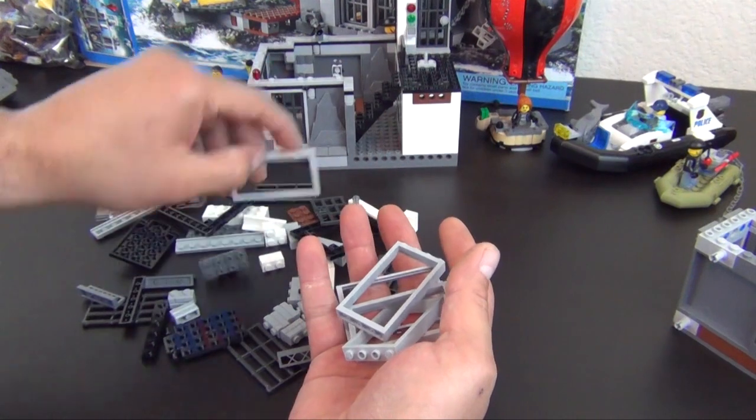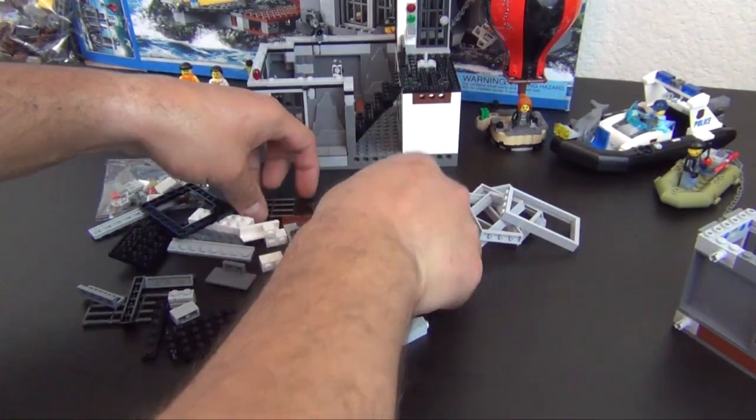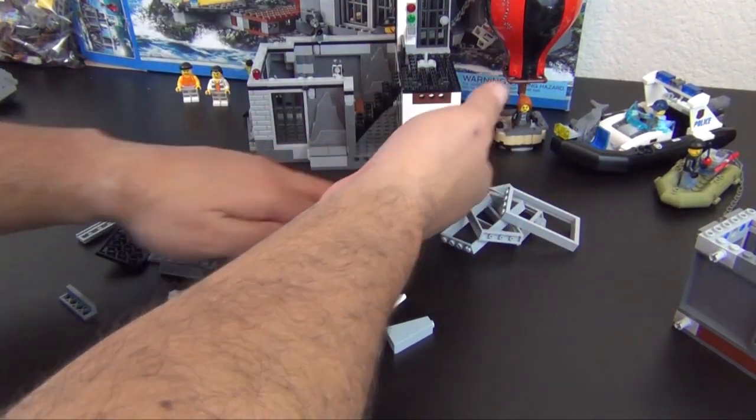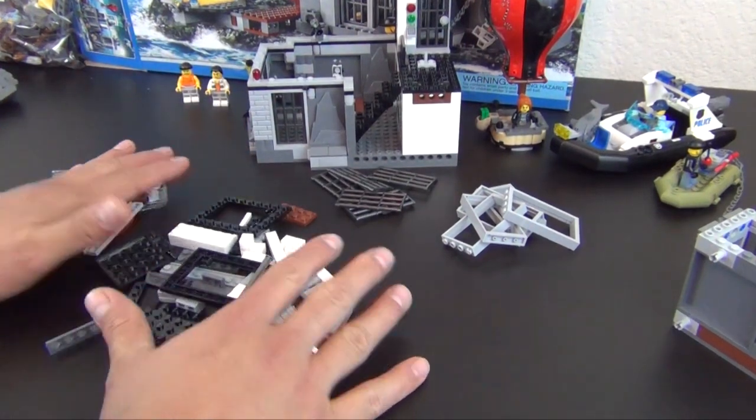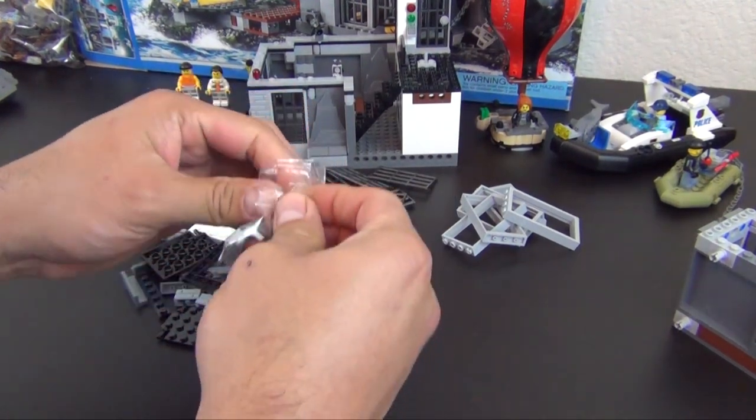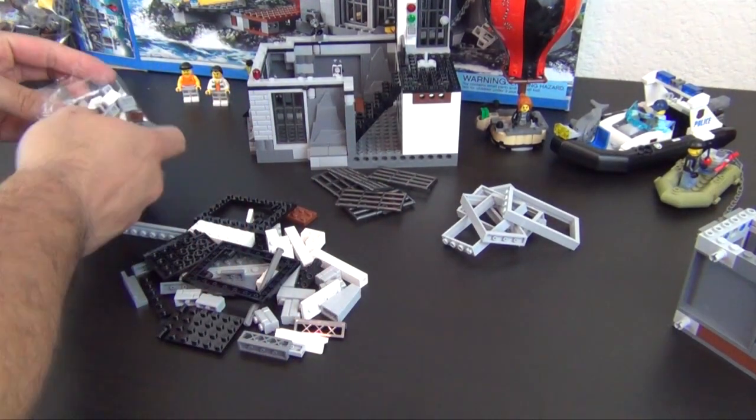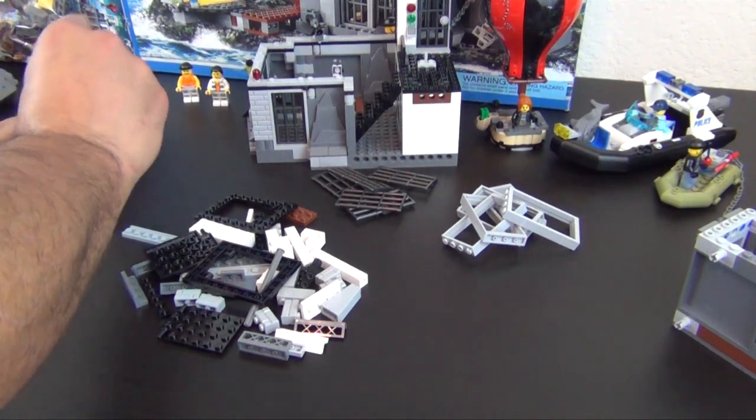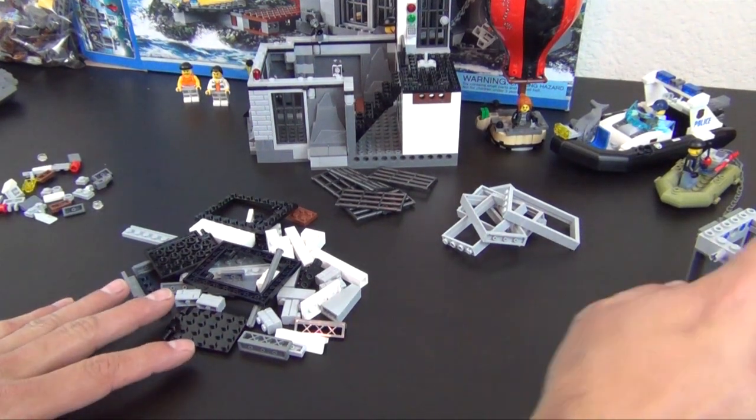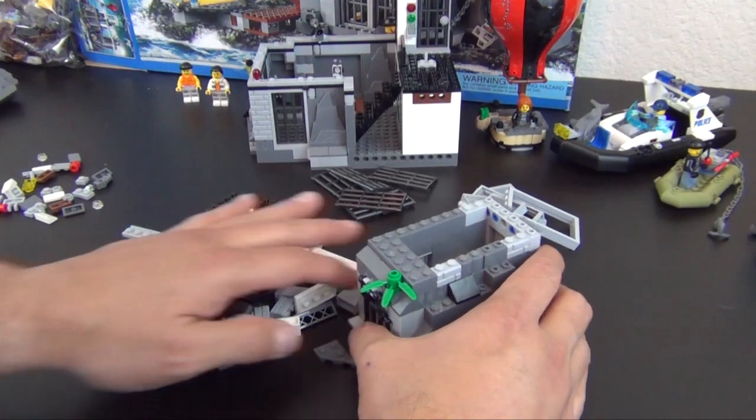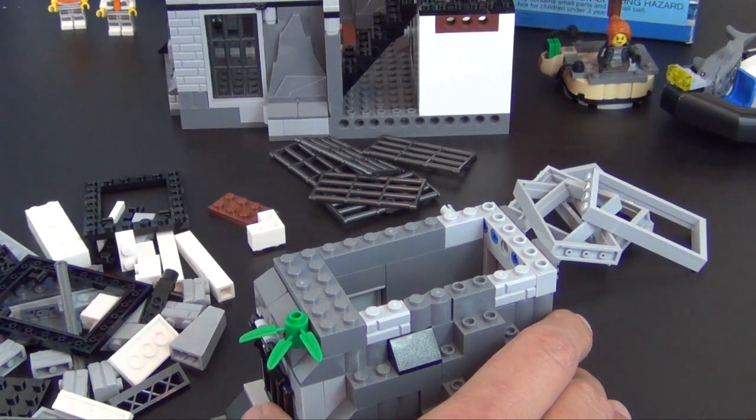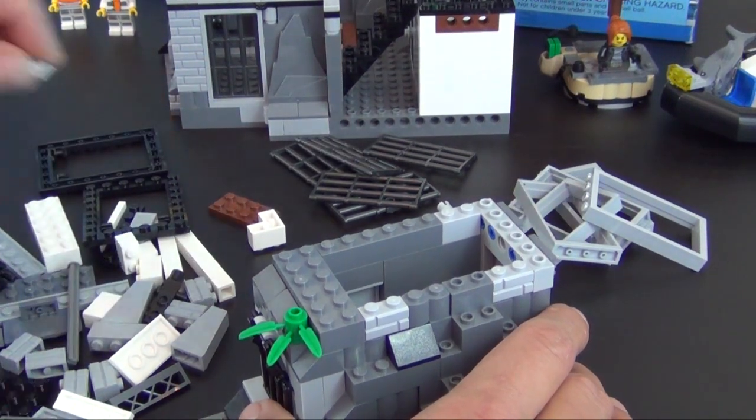Prison Island has a ton of these panels, of course all of the jail cell bars and doors. So once you kind of separate those, there's really not much left out of bag six. We do have a small bag of parts. Okay, so we'll bring over this element. This is kind of what we were working on last. Basically going to continue to build on to it until we get to the top.